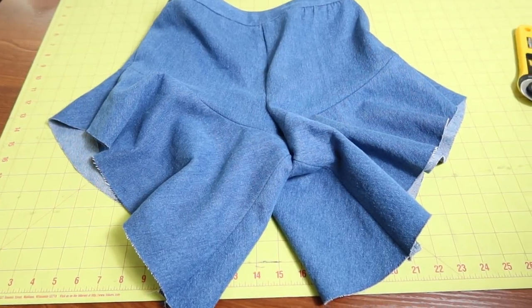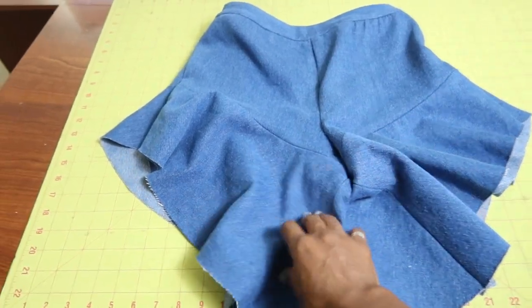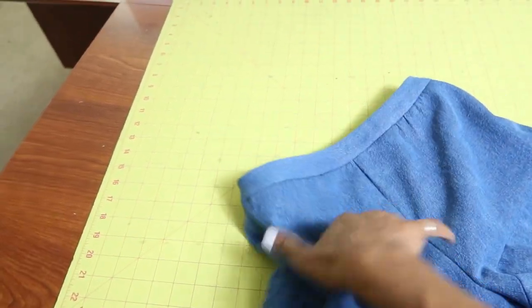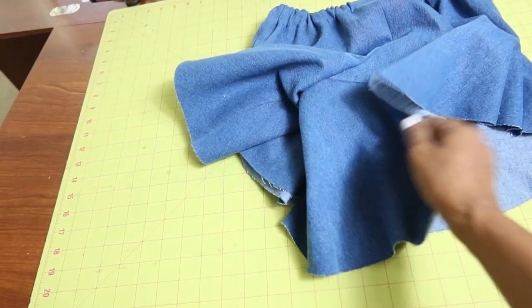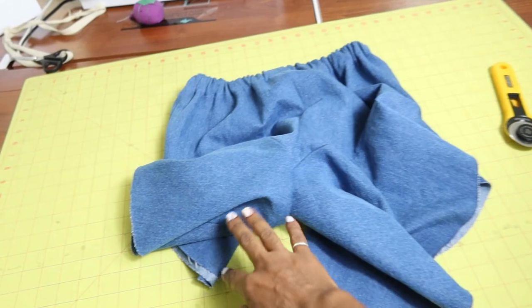I am all done. I want to have a frayed hem on these, so the only thing I need to do now is just throw them in the washing machine, and then I can put them on and show you what they look like.